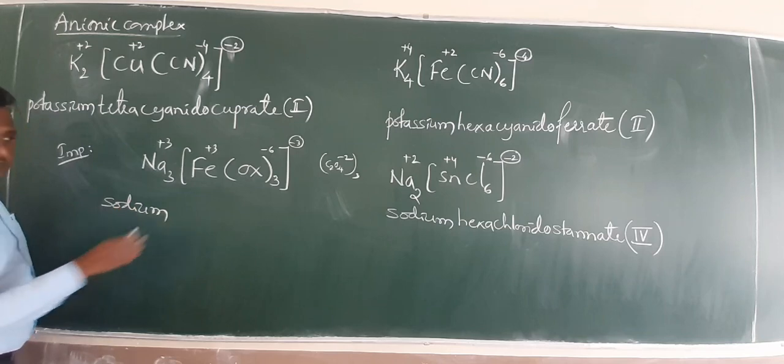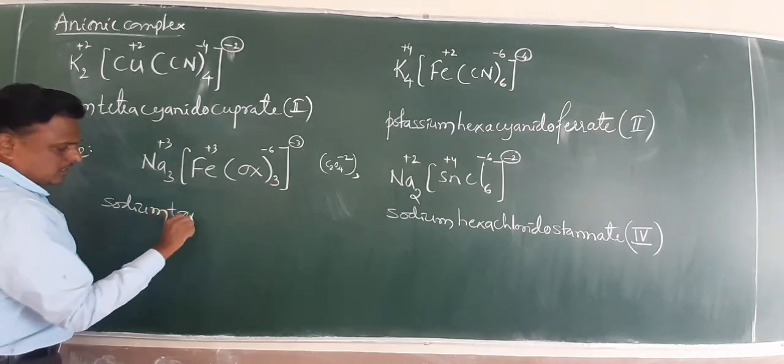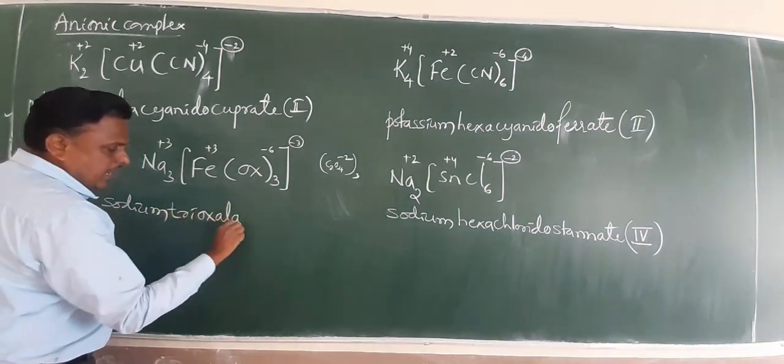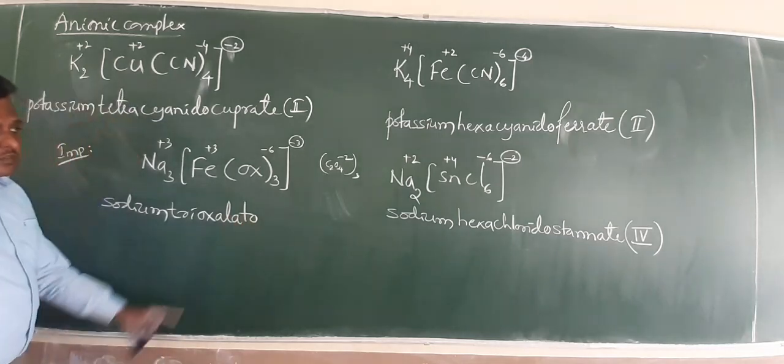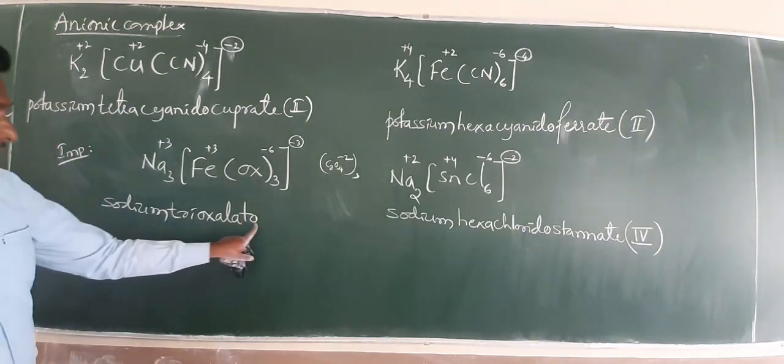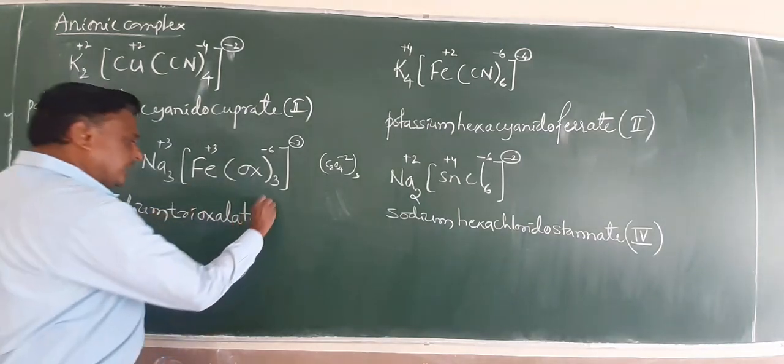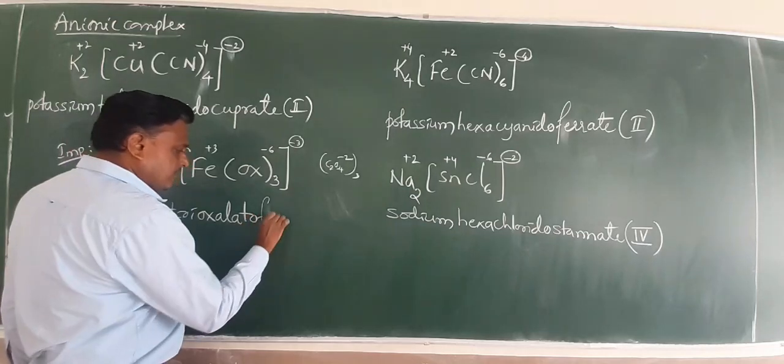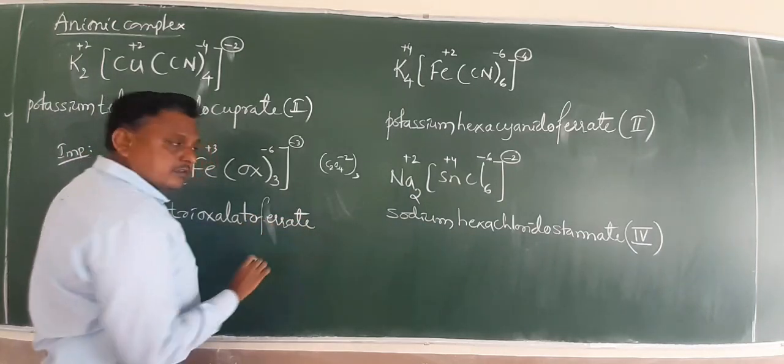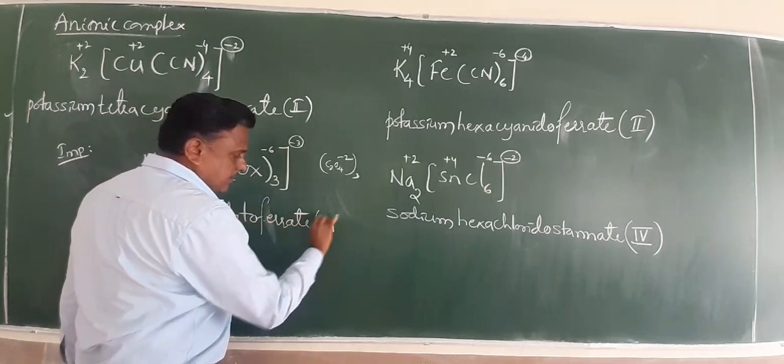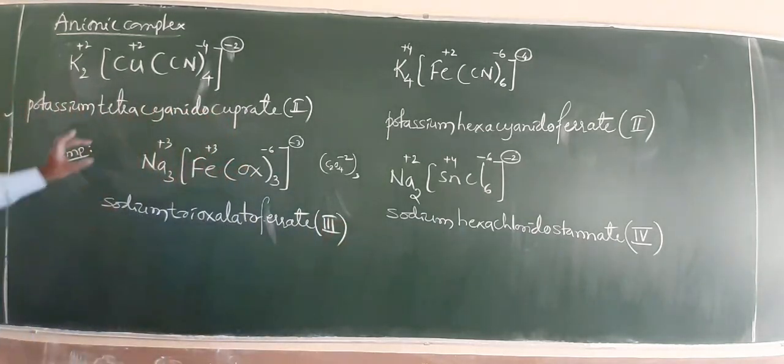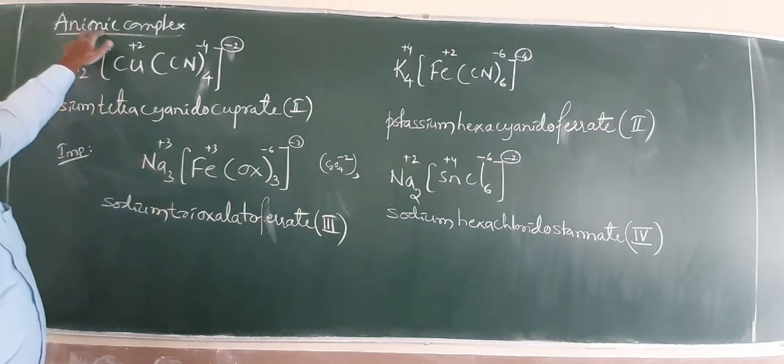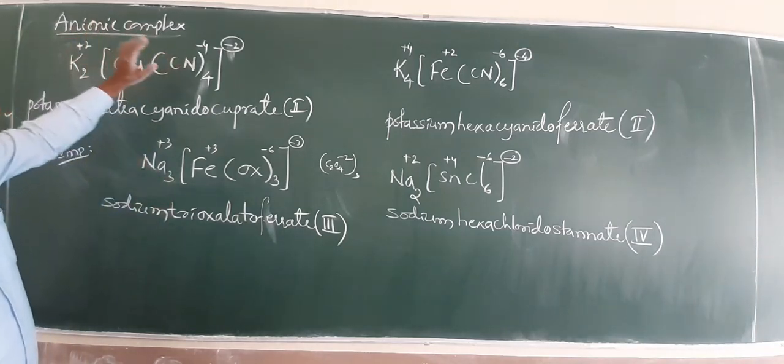Oxalate is a bidentate, charge is C2O4 minus 2 into thrice, minus 6. Automatically iron is plus 3. Net charge is minus 3. Sodium tri-oxalato.